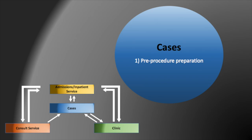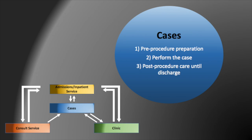Central to this workflow is performing cases. This is done by attendings, fellows, residents, and specially trained NPs, and it has three main parts. The first part is the pre-procedure preparation, which includes all of the prep work from once the case is approved to when the patient is on the angiography table. The next component is actually performing the case, and the final component is the post-procedure care until discharge, which includes all the care provided to the patient from the completion of the case until they are discharged from the hospital.